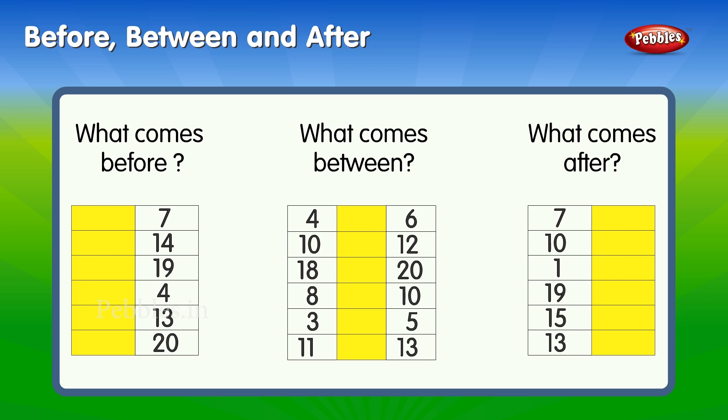What comes before? 4, 3. 7, 6. 14, 13. 19, 18. 13, 12. 20, 19.